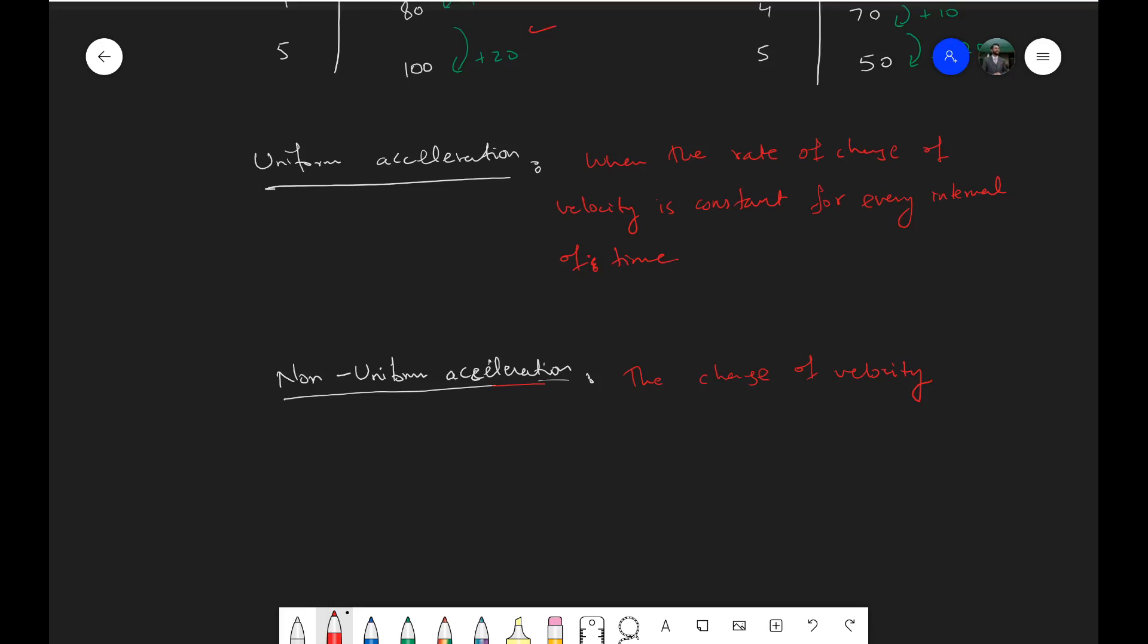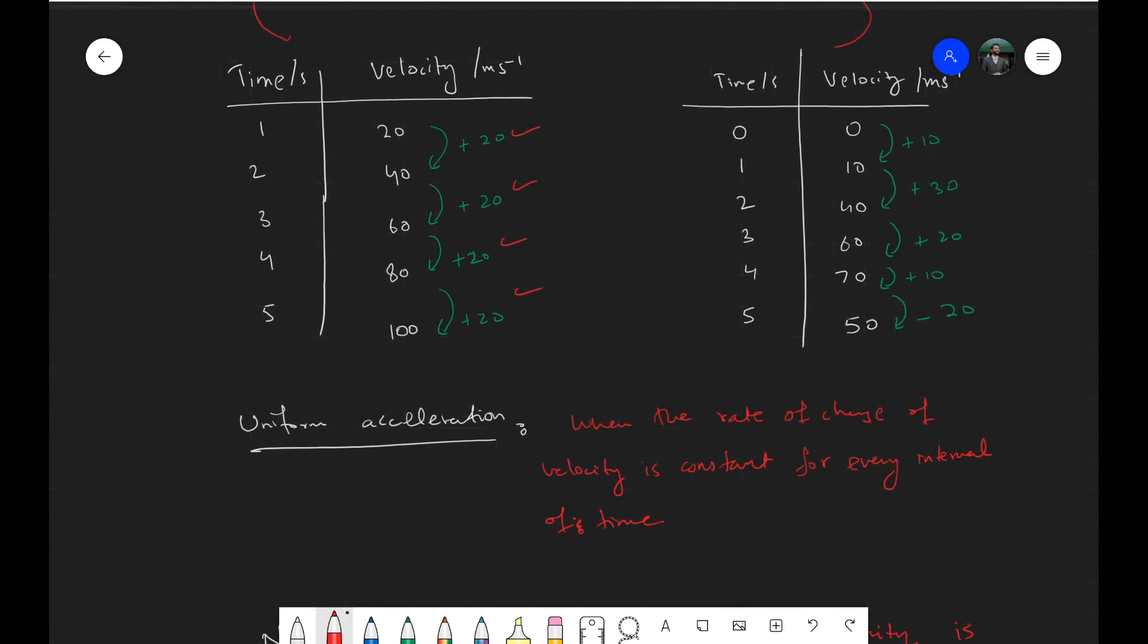The change of velocity is different for each interval or you can say each unit of time. Now what does the unit actually mean here? It could mean a number of things—it could be an hour, it could be a minute, or it could be a second. But mostly since the SI unit of time is seconds, we can say each second of time, the velocity changes by a different amount: first it changes by 10, then by 30, then by 20, then it increases by 10, and then it decreases by 10.